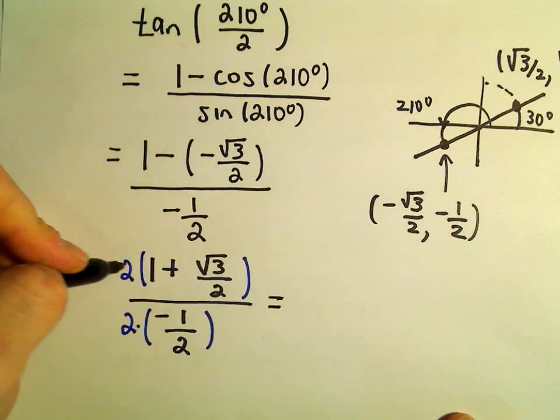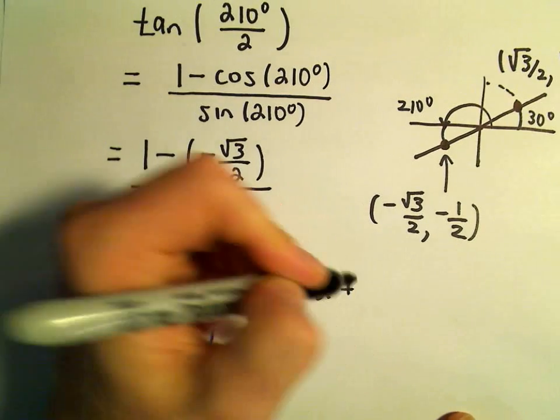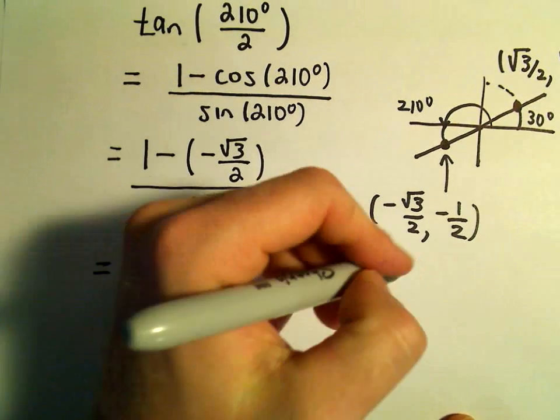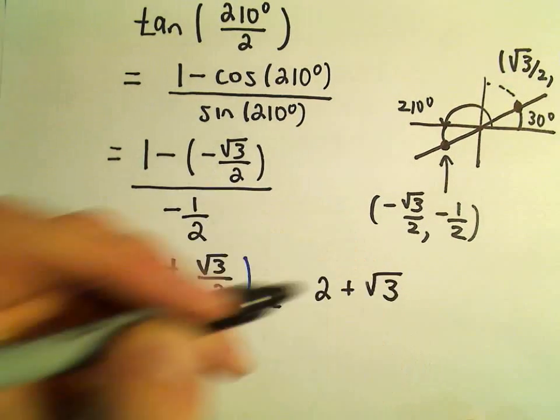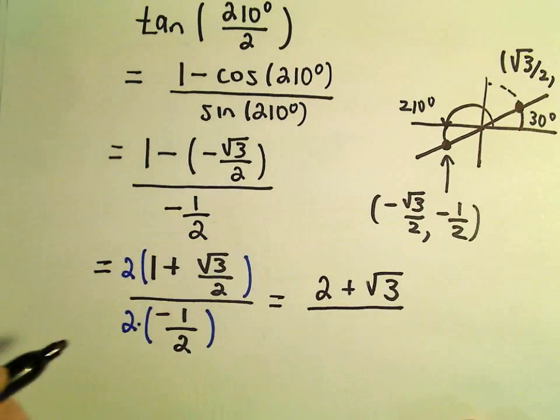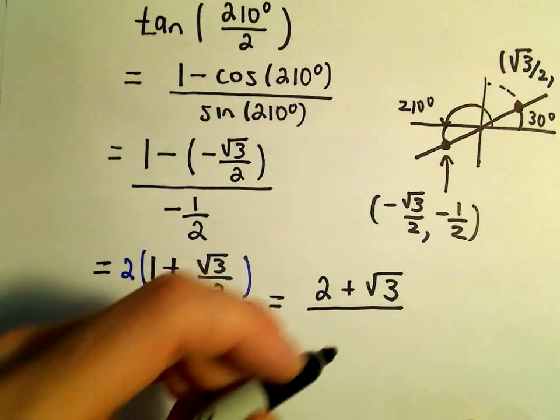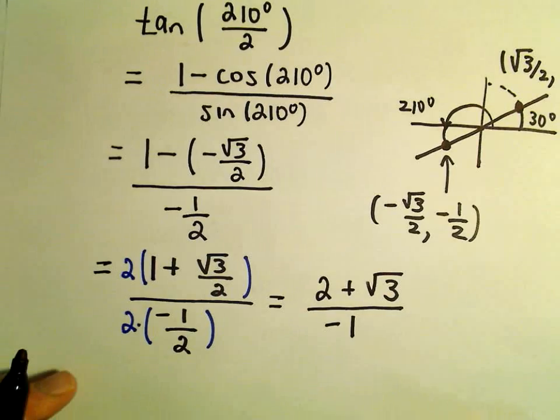So, if we do that in the numerator, we'll get 2. The 2s will cancel out when we distribute, and we'll be left with the square root of 3. In the denominator, again, the 2s will cancel. We'll simply be left with negative 1.